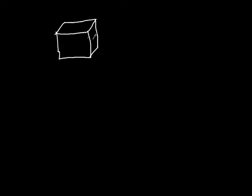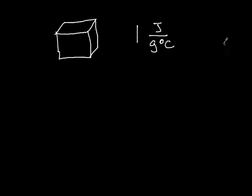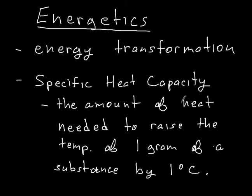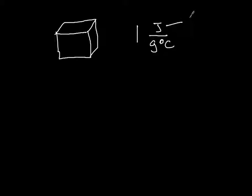Here I have a substance — it doesn't matter what it is, just some substance. To make it easier, we're going to use an easy number. Let's say the specific heat capacity of this substance is one joule per gram per degree Celsius. That feeds back into our definition: the amount of heat — that's joules, our heat energy — needed to raise one gram by one degree Celsius. Per means per one gram per one degree Celsius.